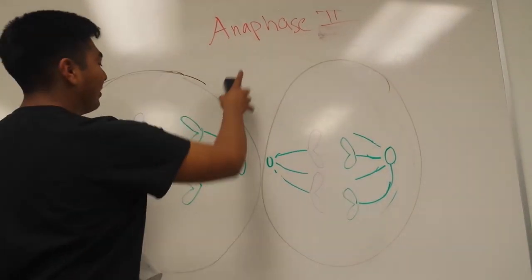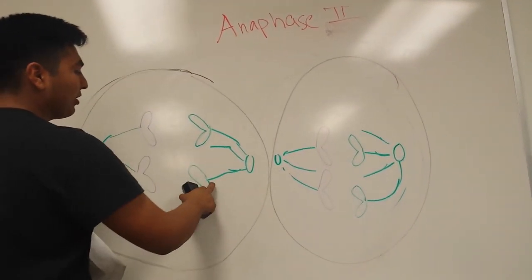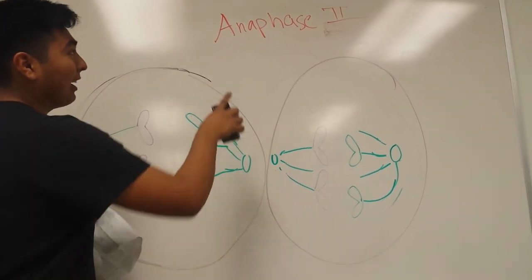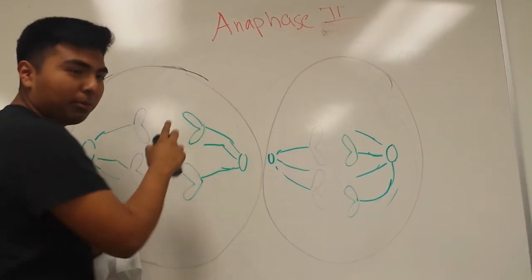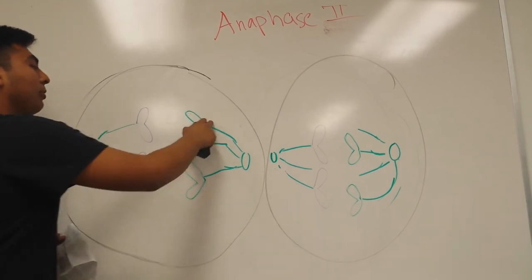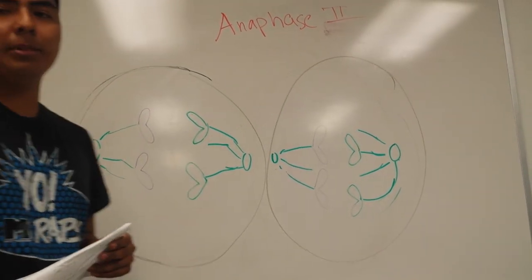During anaphase 2, the spindle fibers attach to the centromere and pull. But notice, unlike anaphase 1, instead of pulling by homologous pair, they are pulled by half, which is a chromatid.